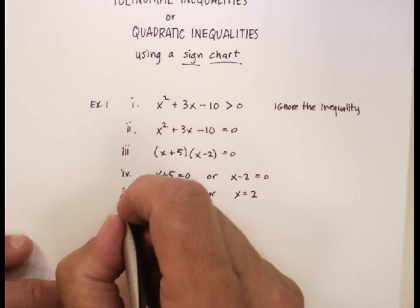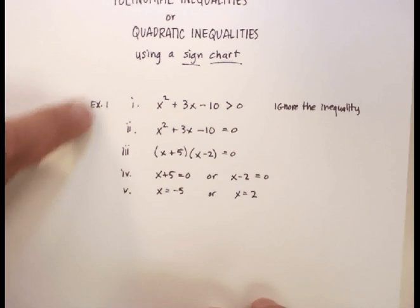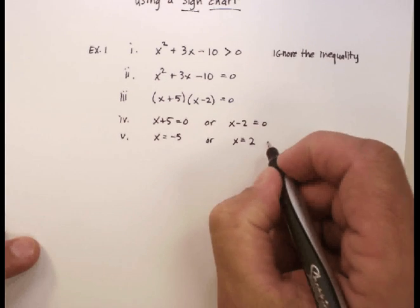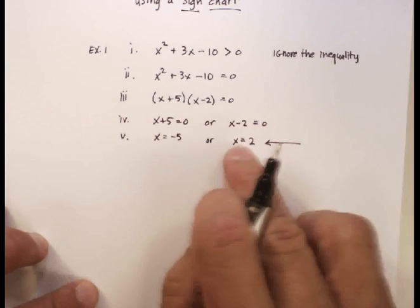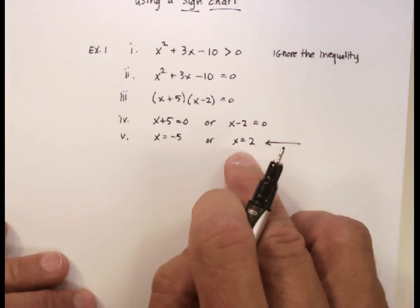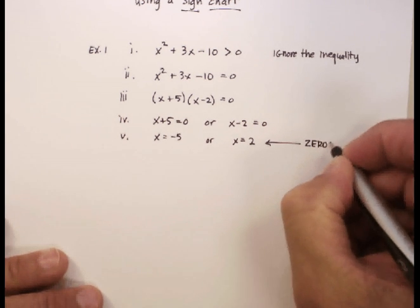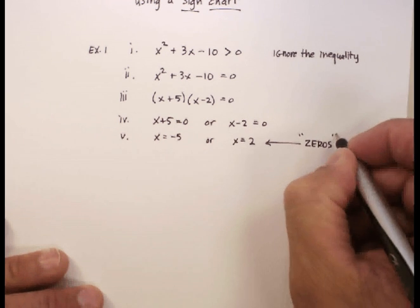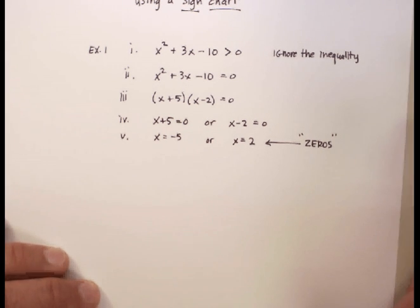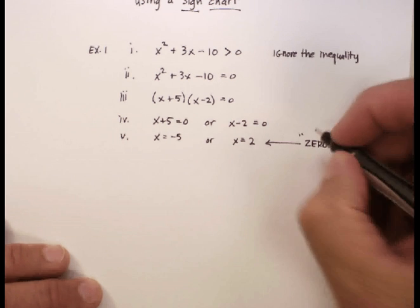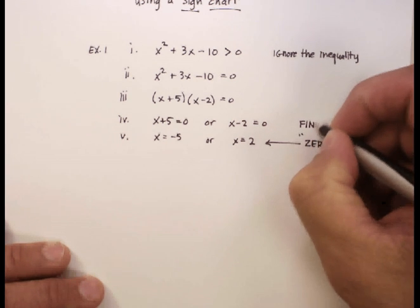Let me just put these as steps. I like putting these little Roman numerals down here for steps. Okay. Now, these x's are the x-intercepts are also called the zeros of the problem. You'll hear that referenced in some textbooks and some teachers will call it that. This is also called finding the zeros.